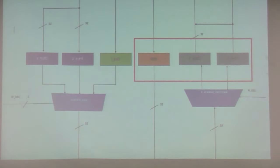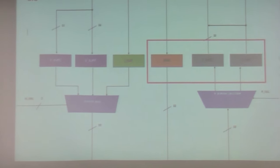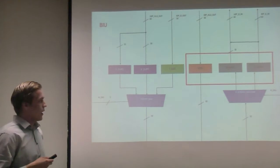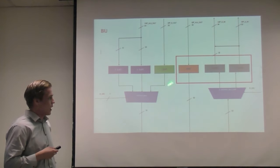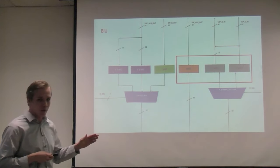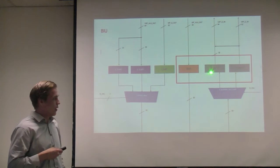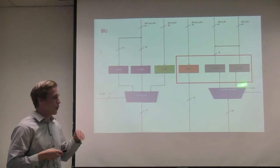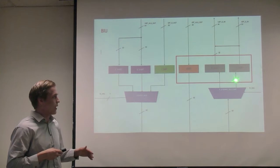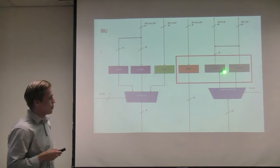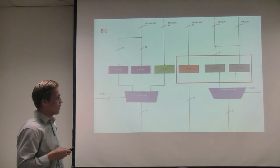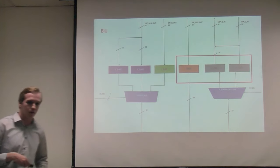The integer data path calculates the effective address, loads it into MAR, and then uses the MAR to load the first word into read buffer two. Immediately after the first word is written, it switches to writing to read buffer one. Once both read buffers are ready, it loads them into the vector data path. There's a path for both buffers to the vector data path, and also a path to the integer data path for just read buffer one.